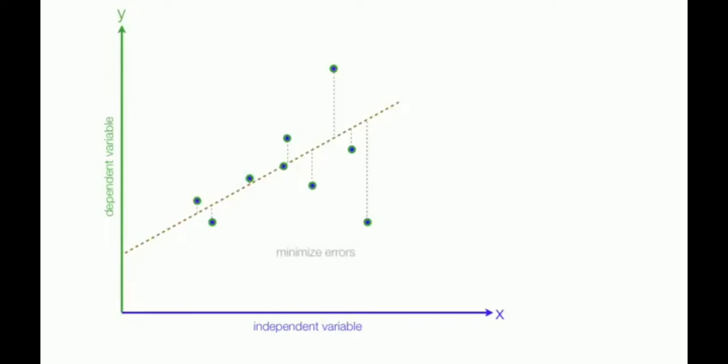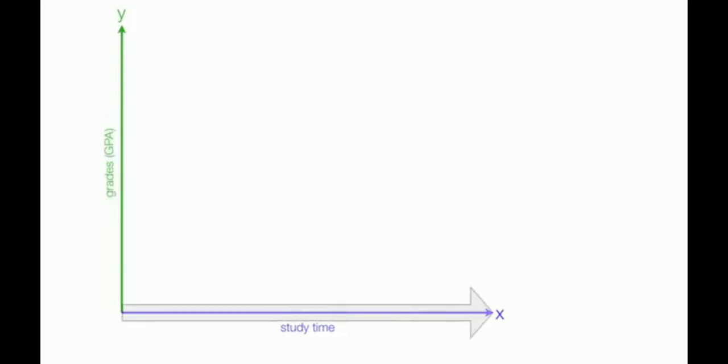Now let's imagine I put study time on the x-axis or make that my independent variable. And the dependent variable becomes grades or GPA. As study time increases, grades should go up. There is a positive relationship.